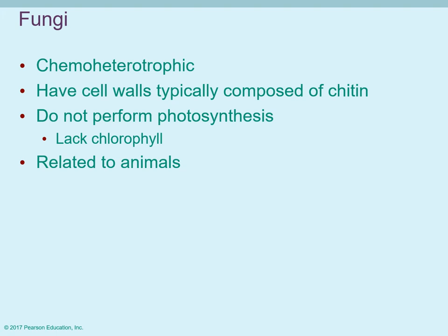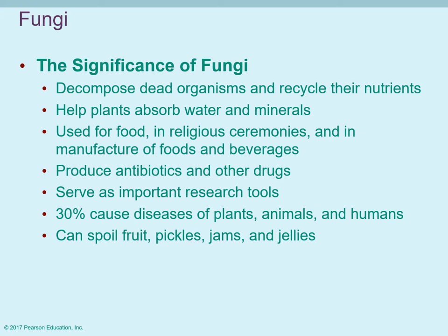Fungi are chemoheterotrophic, so they have to get their source of carbon and energy from organic compounds. They do have a cell wall, but the cell wall is composed mostly of chitin — the same hard material that forms the exoskeleton of insects. They do not carry out photosynthesis. In terms of physiology, they're often more closely related to animals. Fungi are decomposers and recyclers — they help to decompose dead organisms and recycle nutrients such as nitrogen, carbon, sulfur, and phosphorus.